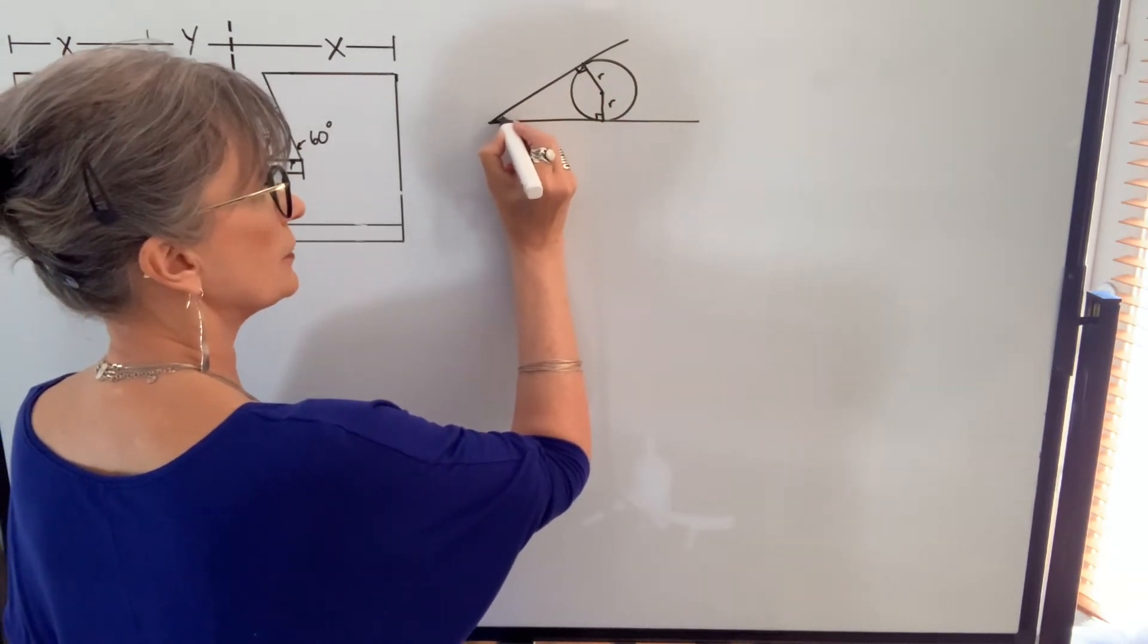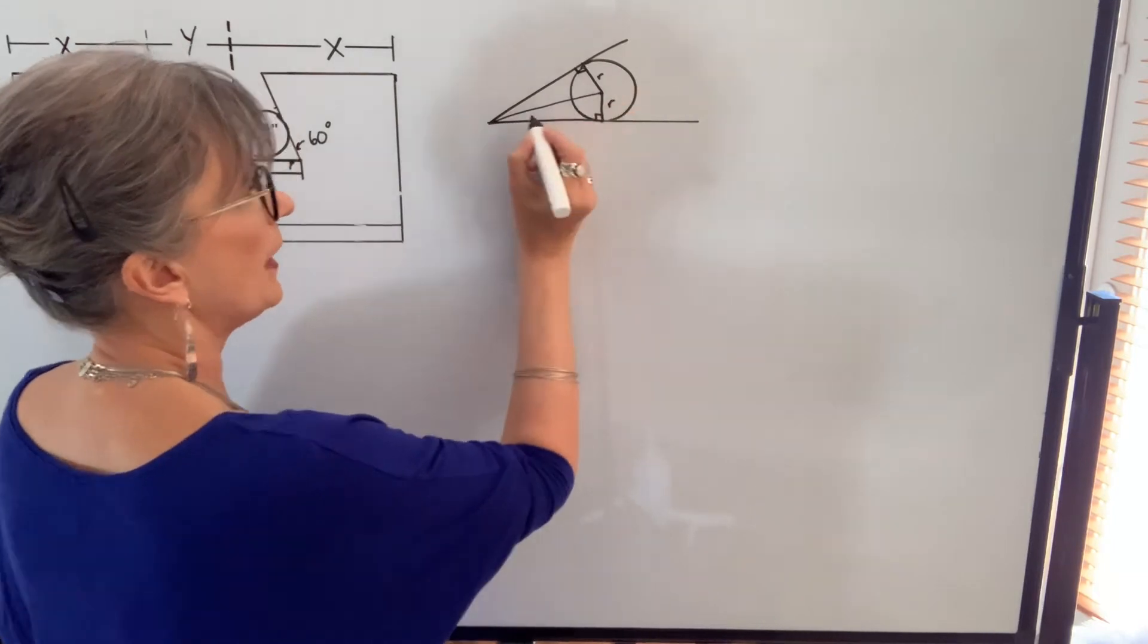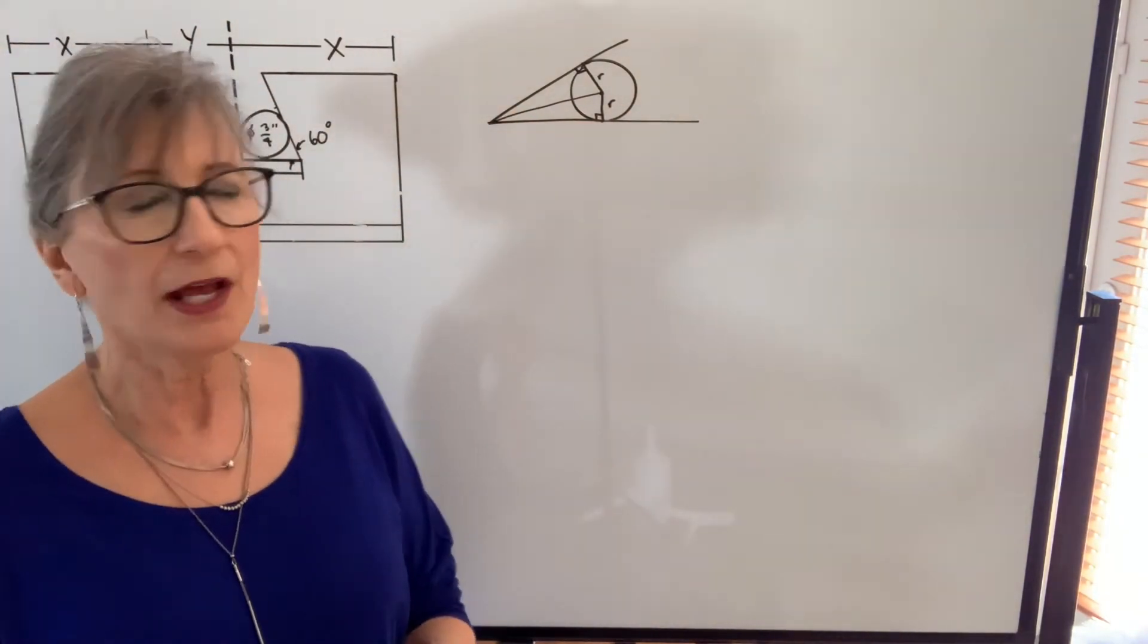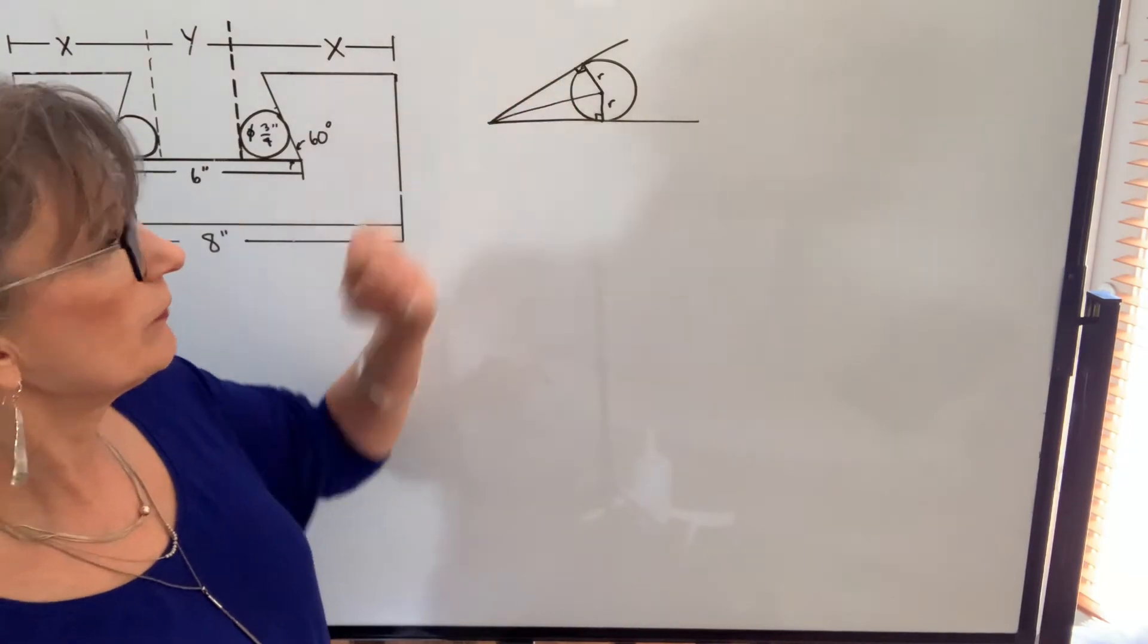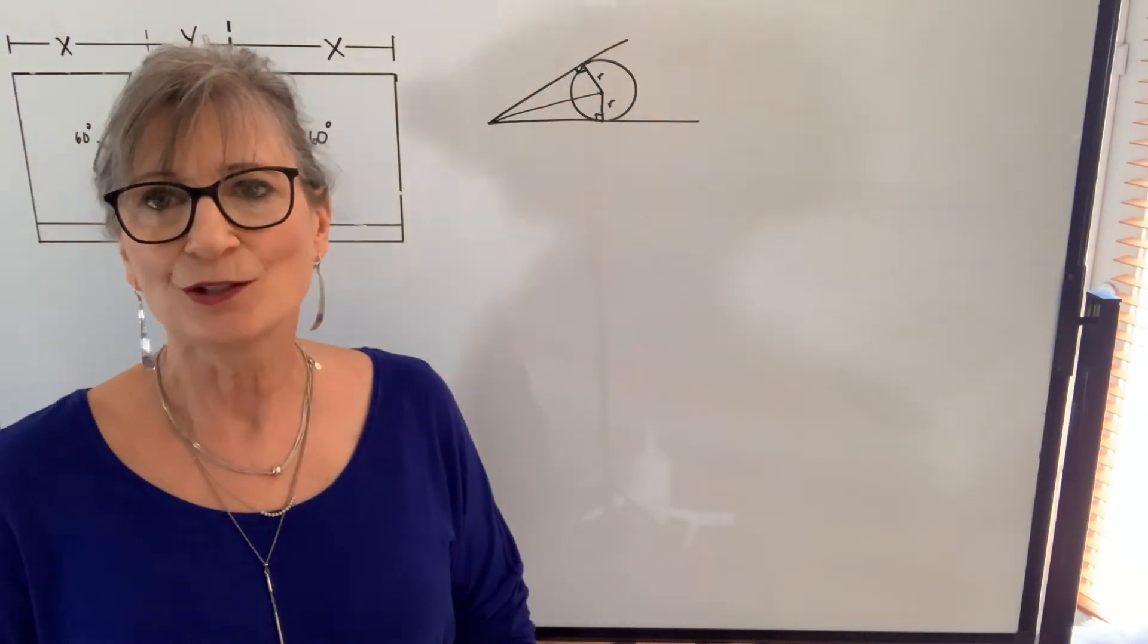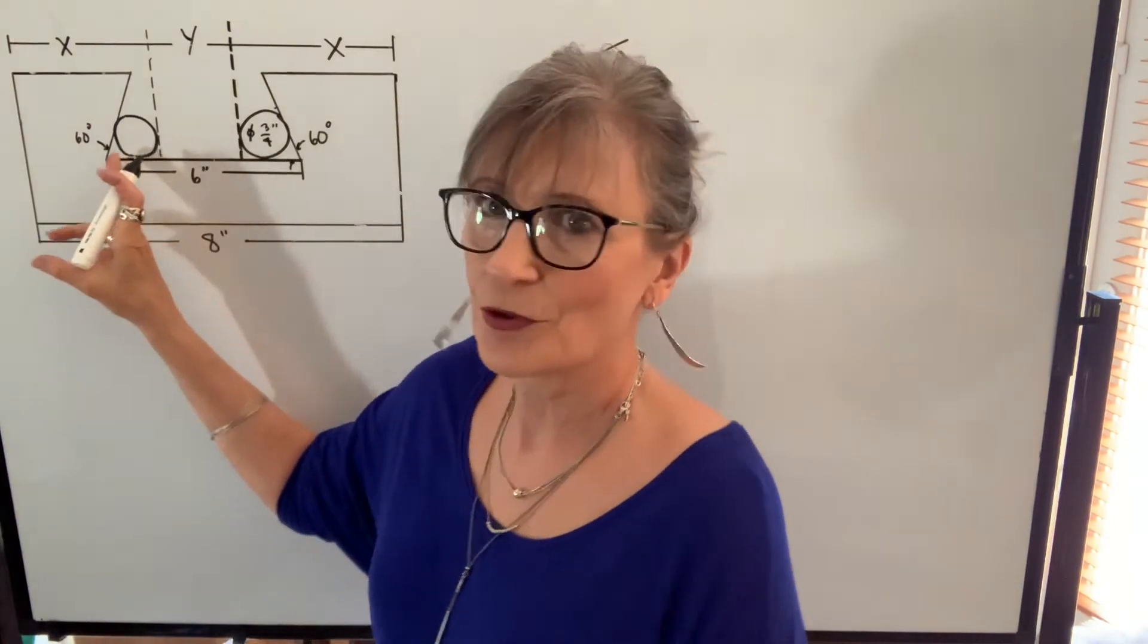And if we were to draw a line from this point of intersection to the center of the circle, that, in fact, would bisect that angle. And what we would have is two equivalent right triangles. So we're going to use that knowledge with our pins.